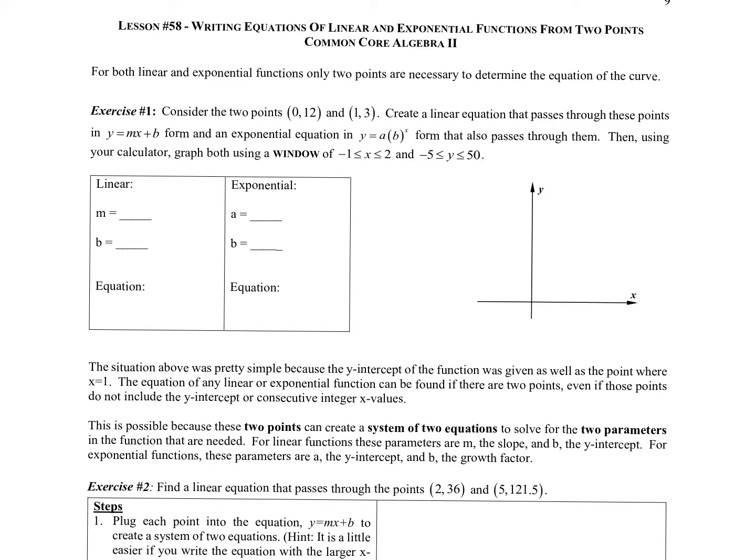Our first example we do have the y-intercept because it says (0,12) so that is the y-intercept and then the other point is (1,3). So we're first going to decide that a straight line goes through these. We're going to find a linear equation. If I make a table out of these and I have 0, 12, and 1, 3, because these points are right in a row or they have integer values in a row I can use that to find the slope. When the x goes up 1 the y is going down 9 which means we have a slope of negative 9 and our y-intercept is 12. So a linear equation would be y equals negative 9x plus 12.